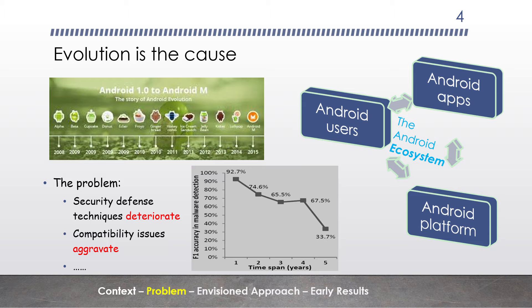The main cause is evolution. The holistic mobile software ecosystem — including the Android runtime, the Android applications, and the Android users — all of these evolve rapidly and holistically to accommodate the latest hardware advances and volatile end-user requirements. But there is trouble with evolution because things change in an uncoordinated way.